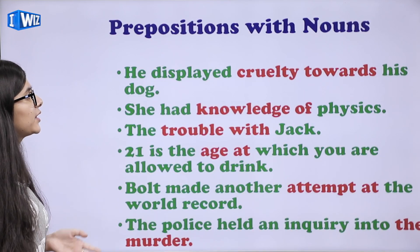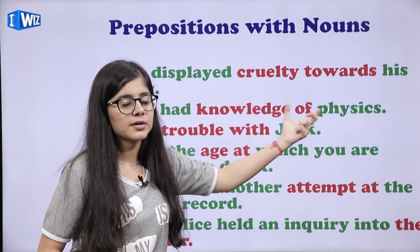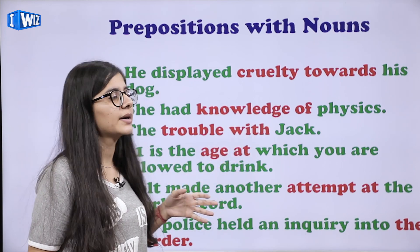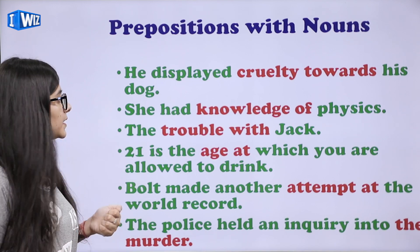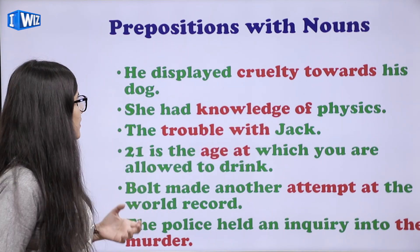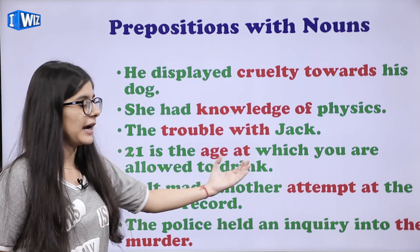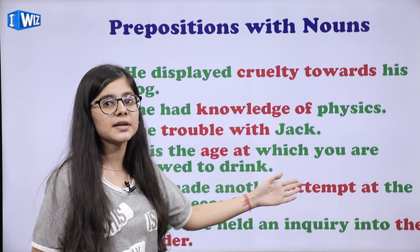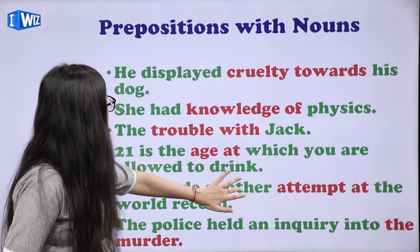Prepositions with nouns. He displayed cruelty towards his dog — usne kya dikhai, cruelty dikhai kiski taraf, dog ki taraf, so 'towards' kya ho jayegi hamari preposition. She had knowledge of physics — usko kaafi knowledge hai physics ki, so 'of'. The trouble with Jack. 21 is the age at which you are allowed to drink — age ke saath 'at'. Bolt made another attempt at the world record — attempt ke saath hum log kya use karte hain — 'at'. The police held an inquiry into the murder — 'into the murder'.